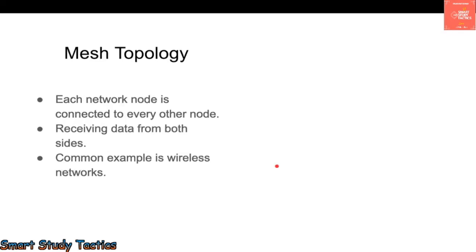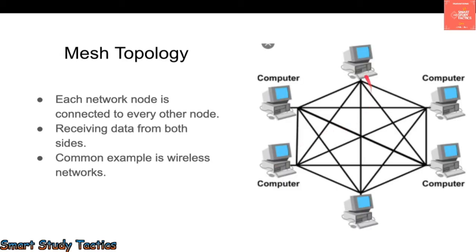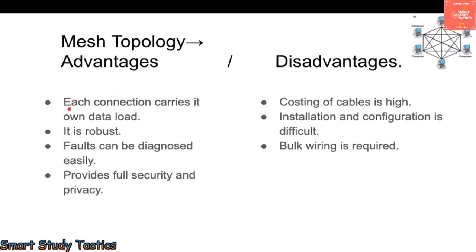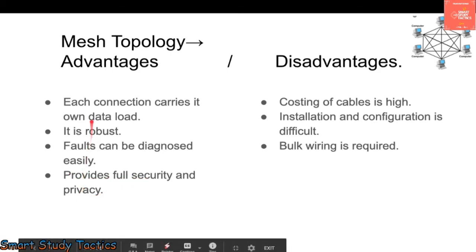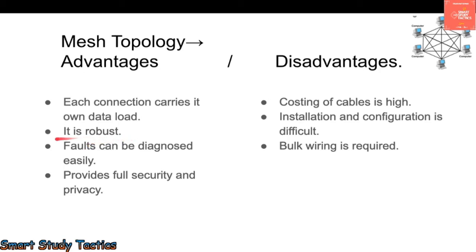Next is mesh topology. As you can see, each computer is connected to every other computer via its own cable. Each network node is connected to every other node and can receive data from multiple sides. A common example is wireless networks. Advantages: each communication link carries its own data load; it is robust; faults can be diagnosed easily; and it provides full security and privacy with secure connections between nodes.